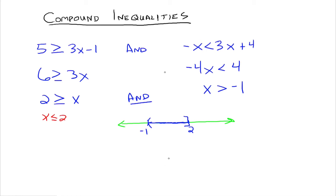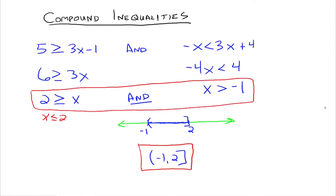That's the graphical representation. In interval notation it would be negative 1 to 2. There are the three notations for the solutions of this and compound inequality. I typically like interval notation, but you should be able to go between all three.